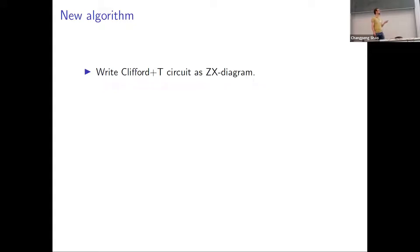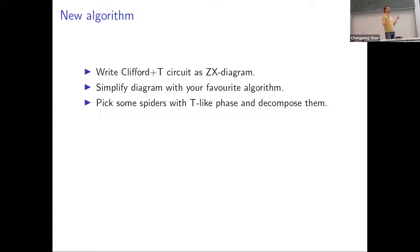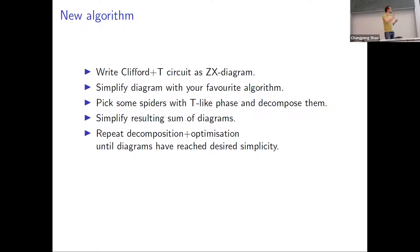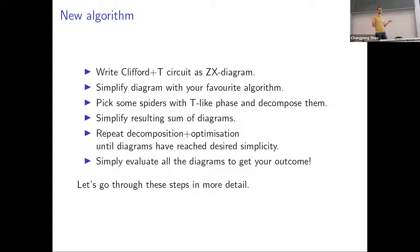The algorithm we propose is: first, write a Clifford-plus-T circuit as a ZX diagram. Then simplify the diagram with your favorite algorithm — whatever you want — with the goal of decreasing the T-count. Then pick some spiders with a T-like phase, so they're magic-state-like, and decompose these into stabilizer states. You then have a sum of diagrams; simplify each diagram again, hopefully killing some non-Clifford phases. Repeat: pick more spiders to decompose, get more diagrams, simplify each, and continue until diagrams are simple enough to calculate their scalar value exactly. Add all diagrams together to get your result.